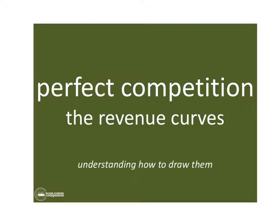Hey everybody, hope you're doing well. This is Brad Cartwright with Econ Course Companion. Let's take a look at perfect competition, but focus on the revenue curves. It's a really important step to understand how the revenue curves are drawn, and to understand that the shape of the revenue curves is controlled by the market structure in which you operate. In perfect competition, it creates a unique set of revenue curves different from monopoly, monopolistic competition, and oligopoly.